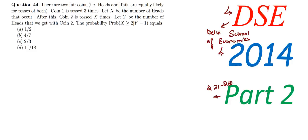Question 44 says there are two fair coins. Here we are talking about two coins which are fair, that is heads and tails are equally likely. For tosses of both, heads have probability of half; similarly tails also have probability of half. Coin 1 is tossed three times. Let X be the number of heads that occur. The maximum number of heads can be three, and the minimum can be zero.